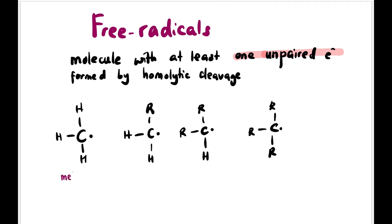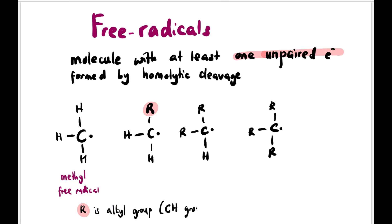We have several types of free radicals: methyl free radical has no R groups, all H. Primary free radical has one R group (one alkyl group) attached to the carbon dot. Secondary free radical has two R groups, and tertiary free radical has three R groups. An alkyl group refers to a CH group.